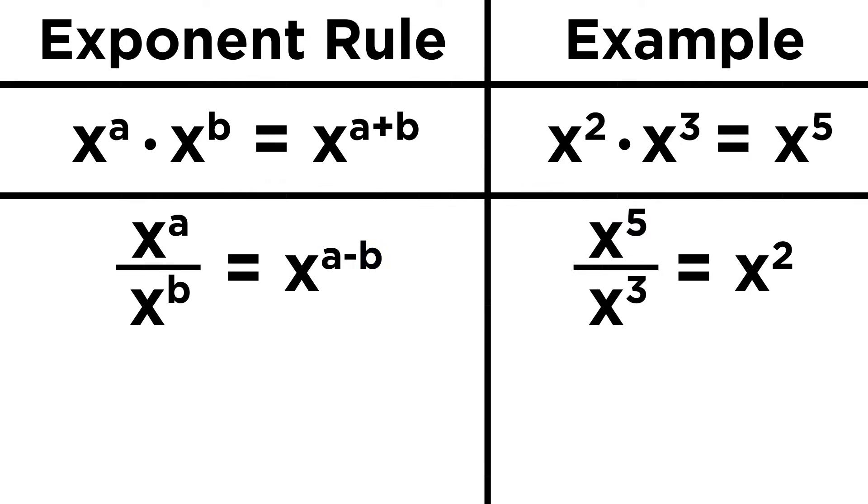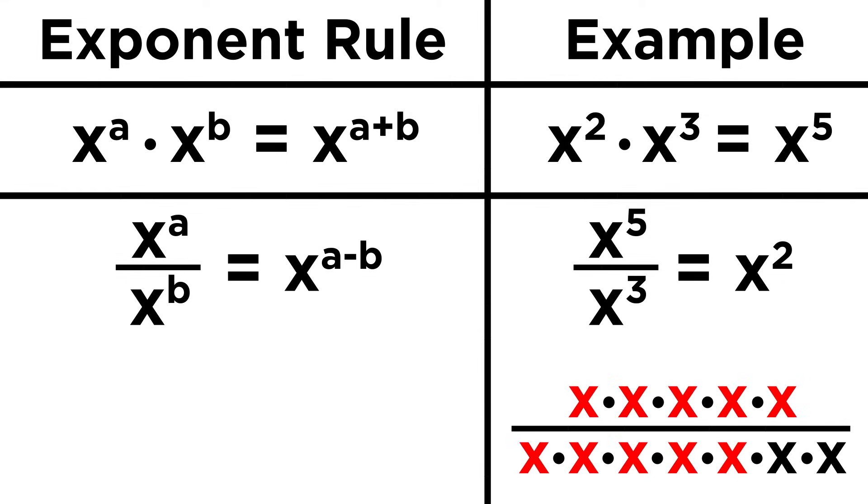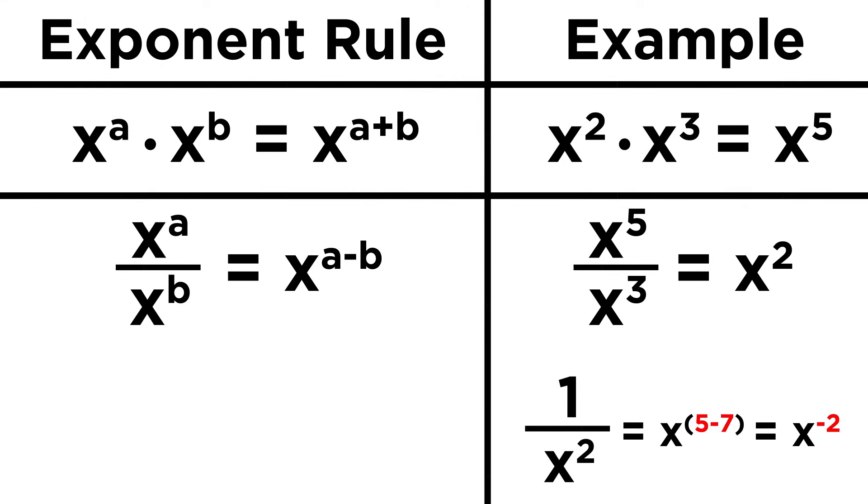This also explains how negative exponents work. If we have x to the fifth over x to the seventh, five x's cancel, and we have one over x squared. But five minus seven is negative two, so this must be equal to x to the negative two as well. This rule also tells us why anything raised to the zero power must be one. X cubed over x cubed is x to the three minus three, or zero, but it is also the case that all the x's cancel, leaving us with one. So anything to the zero power must be equal to one.